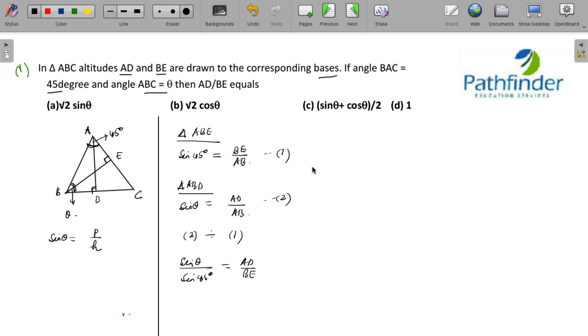Now, just putting the value of sine 45 as 1 by root 2, we will get AD upon BE is equal to root 2 times sine of theta which is your answer, option number A. Simple question really.